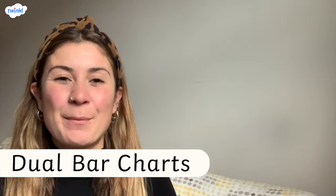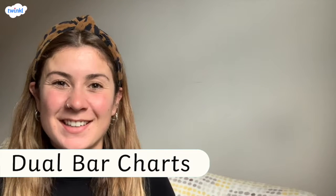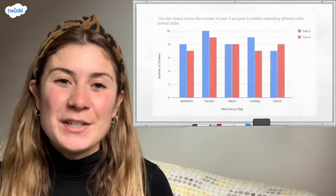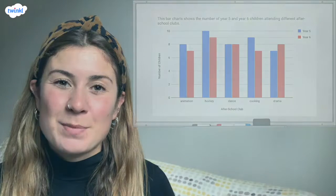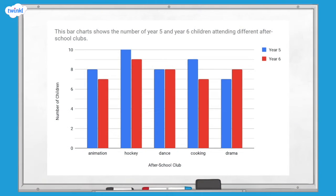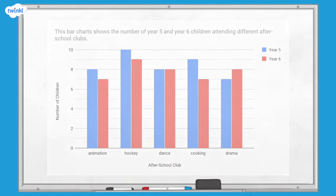This video is here to help you interpret dual bar charts. Dual bar charts are bar charts that show two pieces of information for each category. For example, this dual bar chart gives two pieces of information for each of the after school clubs: the number of year five children that attend and the number of year six children that attend. All children can only attend one club. The key tells us that the blue bars represent year five children and the red bars represent year six children.